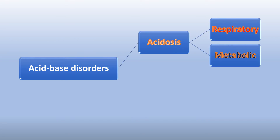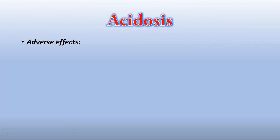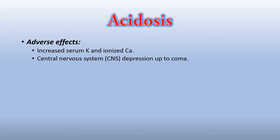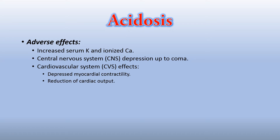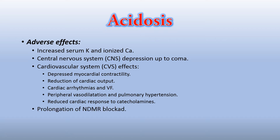Acid-base disorders can be acidosis — respiratory or metabolic — or alkalosis, which can also be respiratory or metabolic. Adverse effects of acidosis include increased serum potassium and ionized calcium, central nervous system depression up to coma, depressed myocardial contractility, reduction of cardiac output, cardiac arrhythmia, peripheral vasodilation and pulmonary hypertension, reduced cardiac response to catecholamines, prolongation of non-depolarizing muscle relaxant blockade, and hyperventilation.